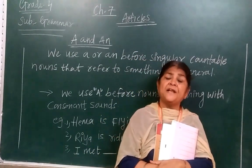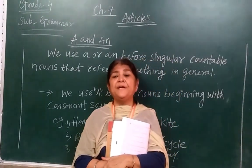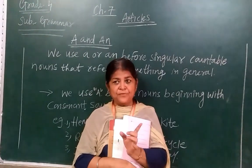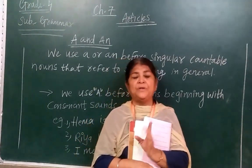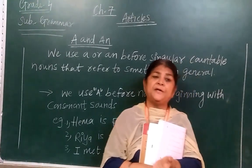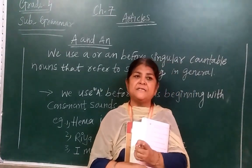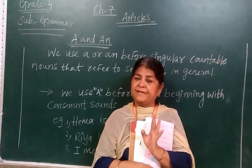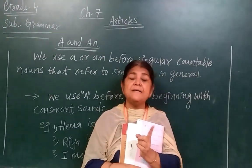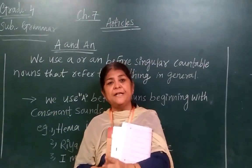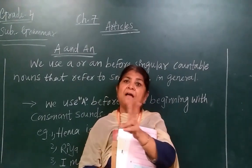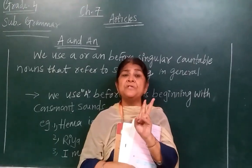How many directions are there? There are four directions: east, west, north, south. So I told you: the sun rises in the east. I used 'The' before both sun and east. Because both are specific and unique.